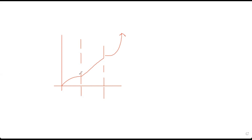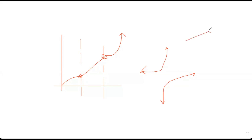One important thing about this piecewise function is that it's called continuous, because at these points of interest there is no change in y value — they both have the same y value. The definition of continuity for algebra two and pre-calculus is basically: can you draw it on paper without lifting your pencil? A rational function is not continuous because you have to draw one part and then draw the other. Similarly, if you have a hole in the middle or a change in y value, that's also not continuous.